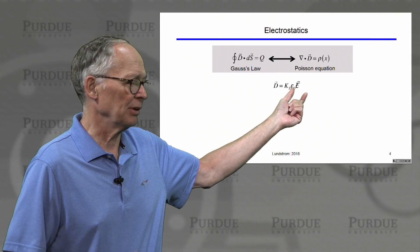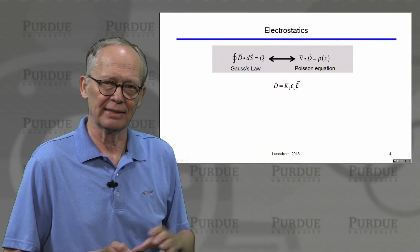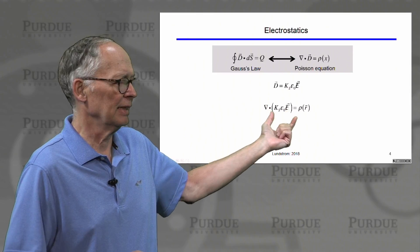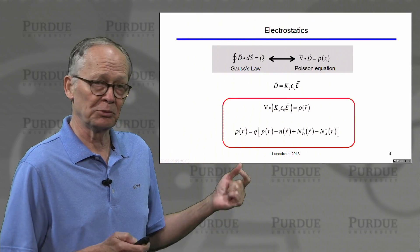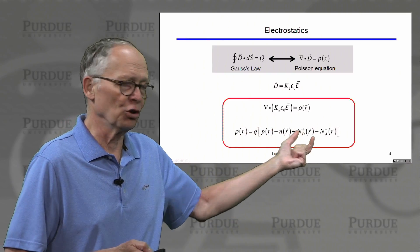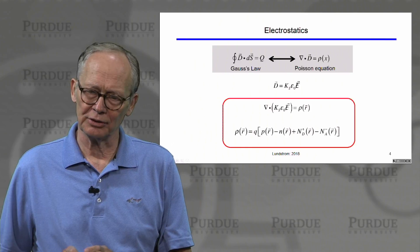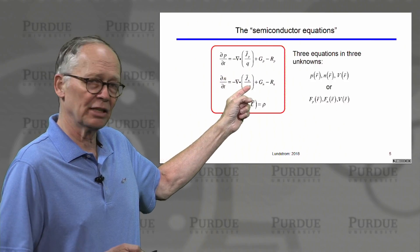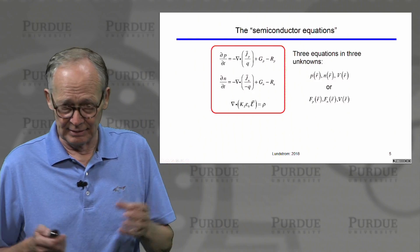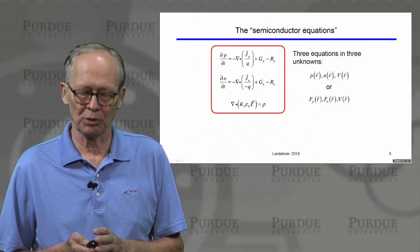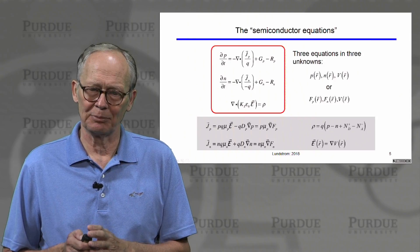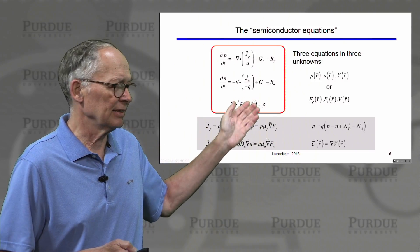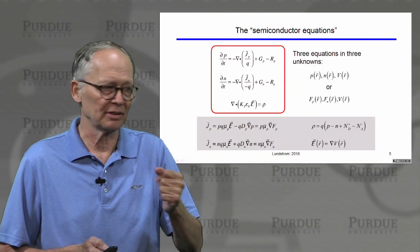D is related to the electric field by the relative dielectric constant and epsilon naught, the permittivity of free space. The charge comes from two sources: the mobile carriers and the ionized dopants that we introduce into the semiconductors. These sets of equations - a continuity equation for holes, a continuity equation for electrons, and Gauss's law - give us the equations that describe the operation of semiconductor devices. We augment these equations with constitutive relations that relate the currents and space charge density to the unknowns.